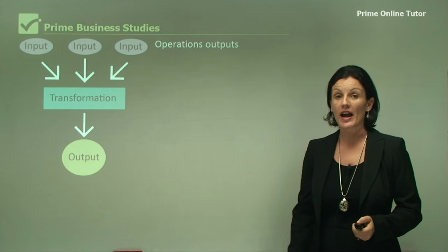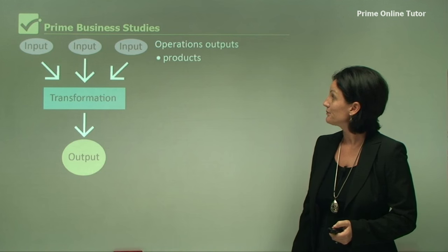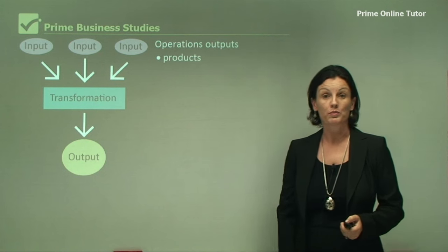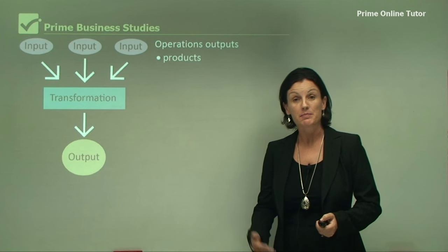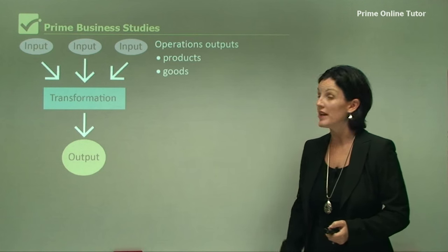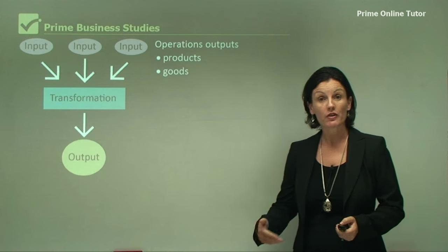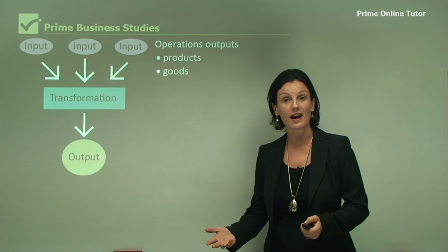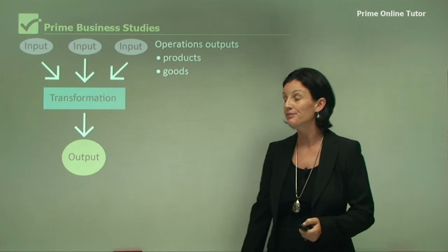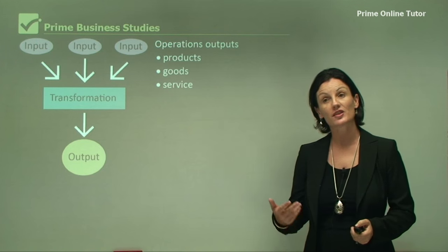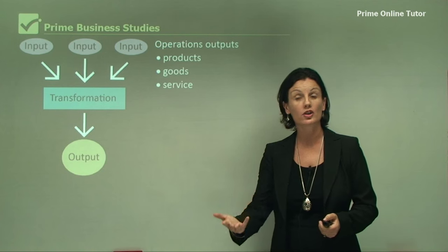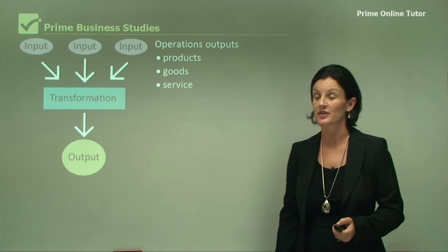And then we have our outputs. All outputs are called products. Depending on the business, they're going to be a good — for example, a car or a piece of furniture — or a service, such as a haircut or going to the dentist.